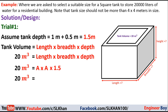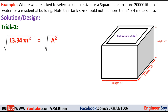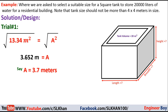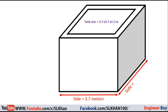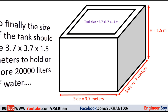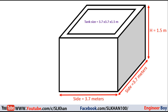So a squared equals 20 divided by 1.5, which gives a squared equals 13.34 square meters — the top area of the tank. Taking the square root of both sides, we get one side of the tank equal to 3.652 meters, or approximately 3.7 meters. Based on the assumption of depth equals 1.5 meters, the side is 3.7 meters, which is suitable given our limited area. So the size of the tank should be 3.7 by 3.7 by 1.5 meters to store 20,000 liters of water. This is trial number one.